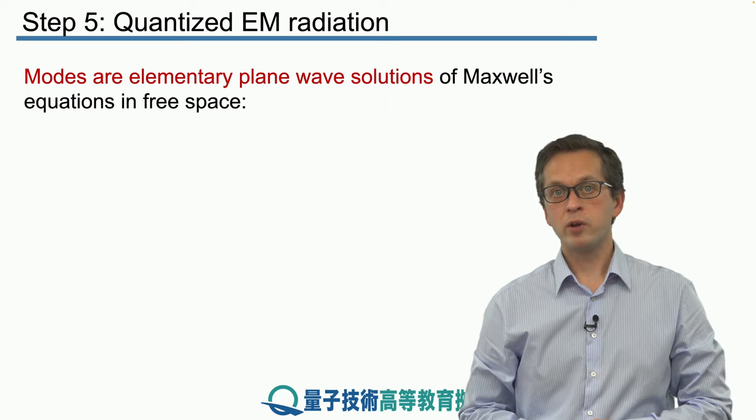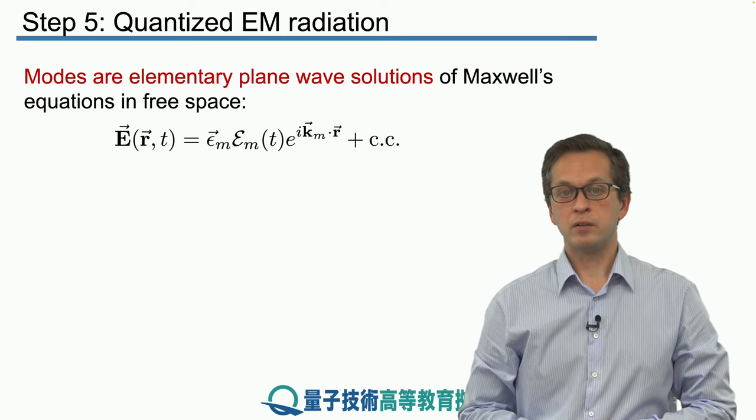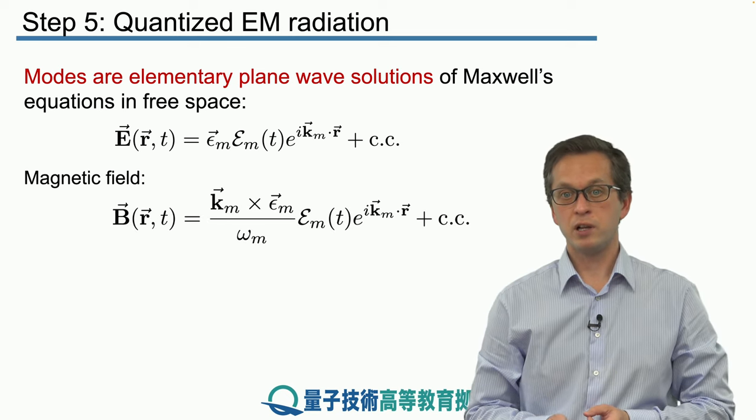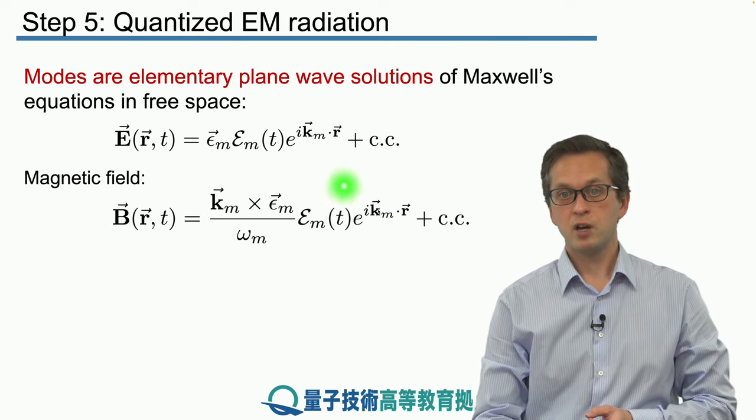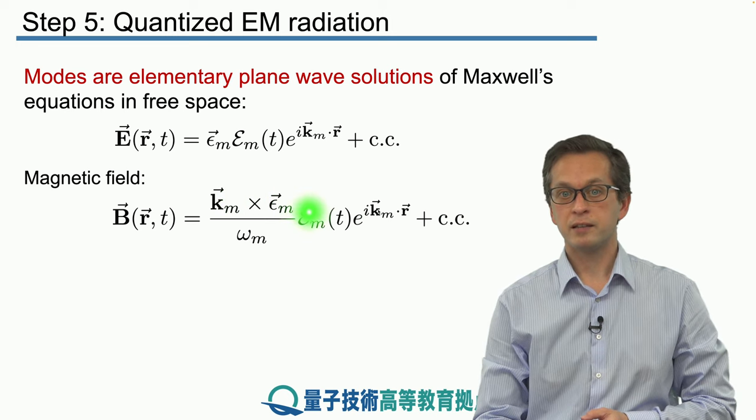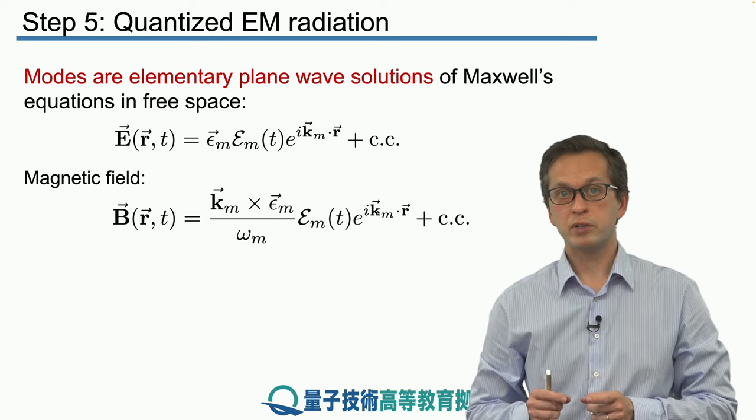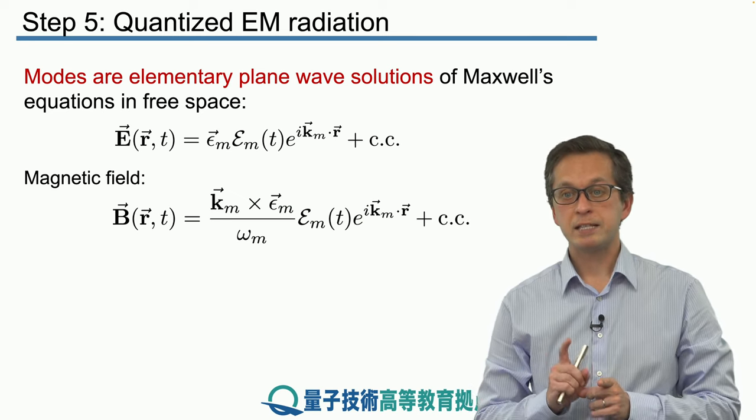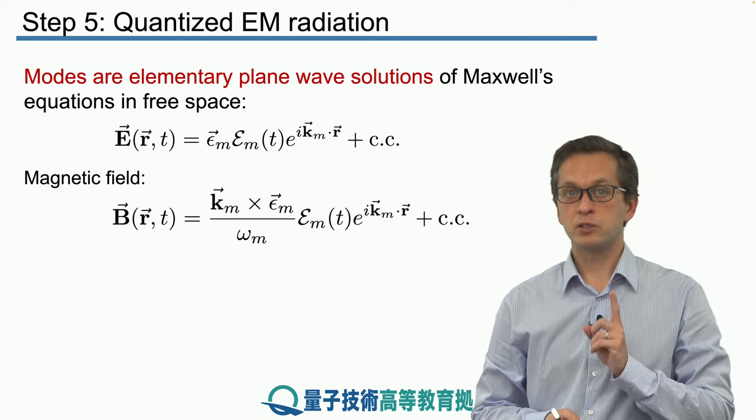Knowing the electric field, we can immediately compute the magnetic field using Maxwell's equations: B(r,t) = (k_m × ε̂_m)/ω_m ℰ_m(t) e^(i k_m · r) + c.c. The magnetic field is perpendicular to the direction of propagation and perpendicular to the E field.